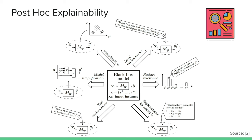That's why we need post-hoc explainability methods — getting some explanations after training a black box model. One approach is text explanations that represent the functioning of the model, stating for example that the output for xi is yi because of a particular condition. Another is explanations by simplification, where we rebuild a system based on the trained model but in a much simpler and more understandable form — we'll see an example for this later in this lecture.